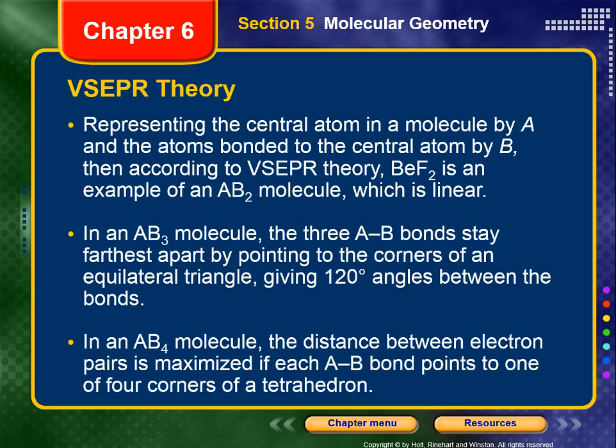Representing the central atom by A and the bonded atoms by B, BeF2 is an example of AB2, which is linear. In an AB3 molecule, the three AB bonds stay farthest apart by pointing to the corners of an equilateral triangle, which has 120-degree angles between the corners. So AB3 molecules will have 120-degree angles between the bonds.